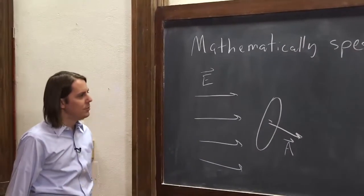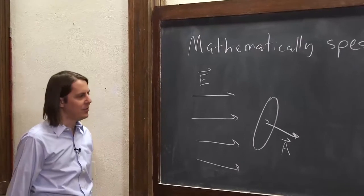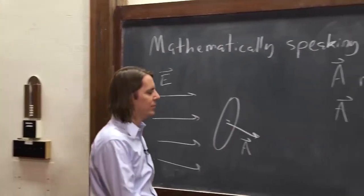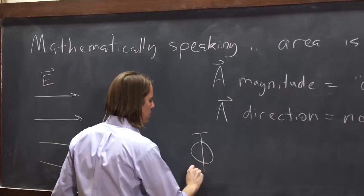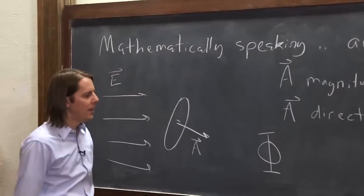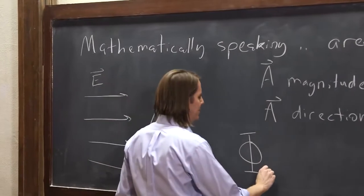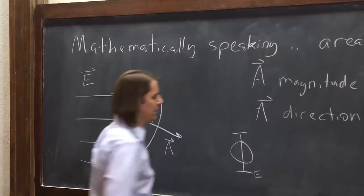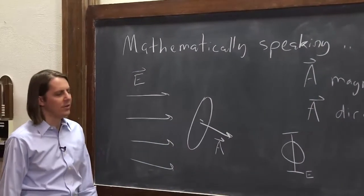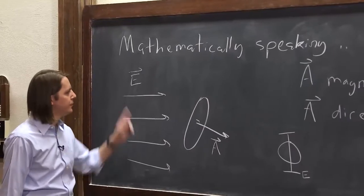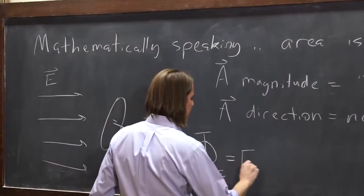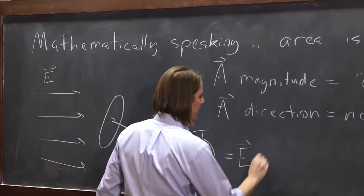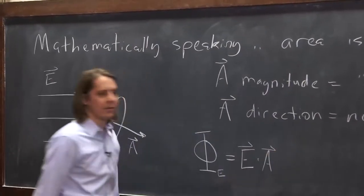So now, if we want to define this flux mathematically, first we give it a symbol. Large phi usually means the flux. And you'll usually put something down here that means the flux of what? In this case, we mean the flux of the electric field. So I'll put phi e. The flux in this case is simply the dot product of the e field and the area vector.